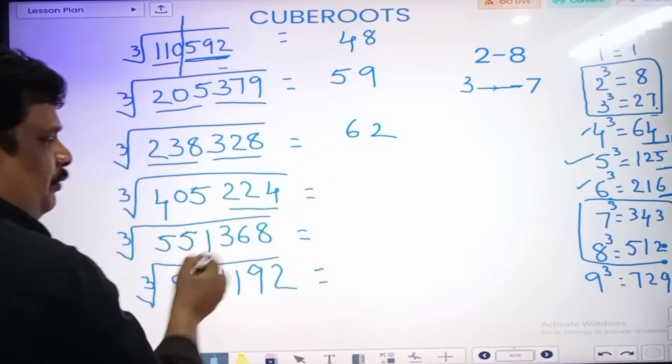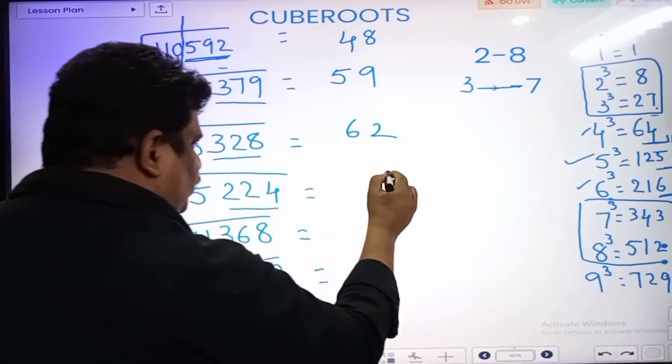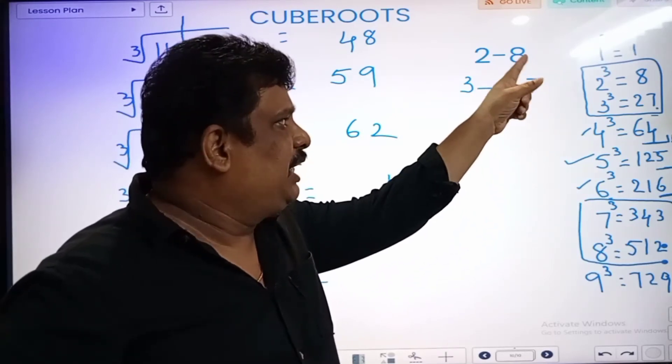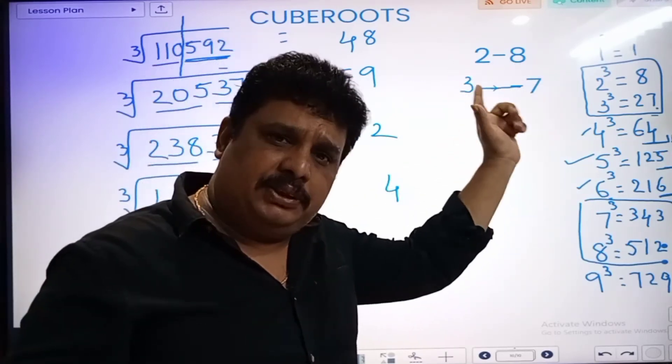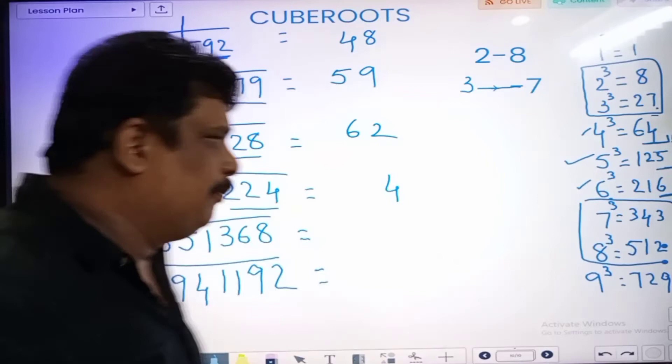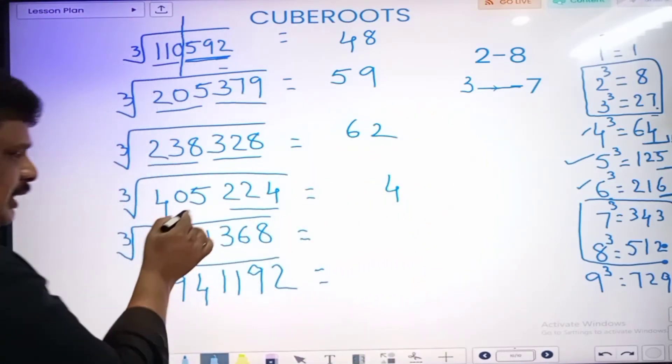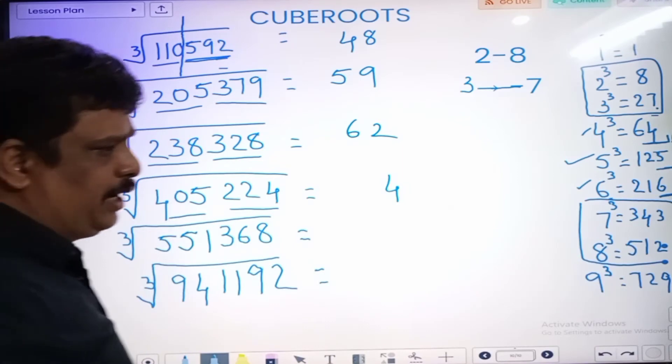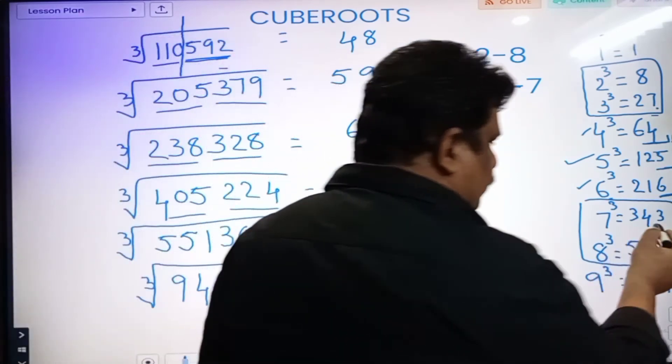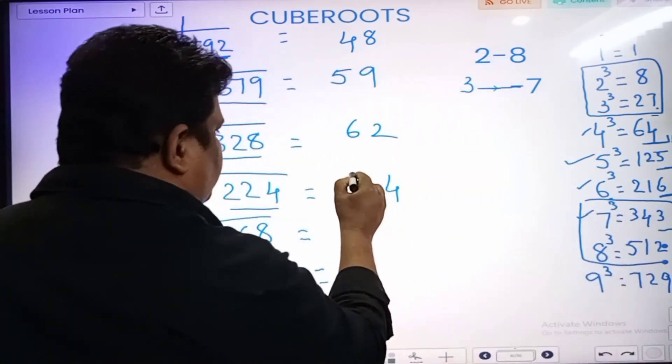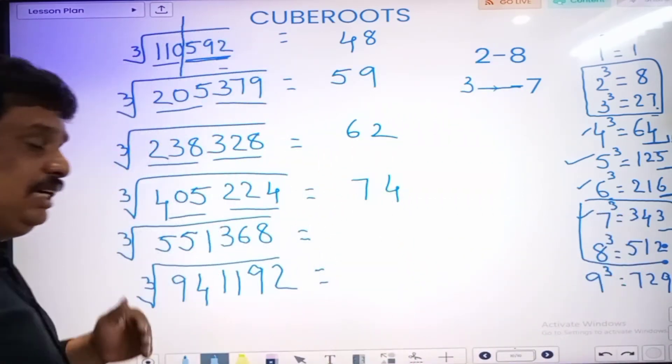Similarly, 3 digits. Last digit 4. 4 is the answer, last digit 4. 2 was 8, 8 was 2. 3 was 7, 7 was 3. Remaining, same numbers. Last digit, so 4. In the beginning, remaining: 405. 405. Then nearest to between 7 cubed and 8 cubed. So less value, 7. So that is why, in the answer: 74.